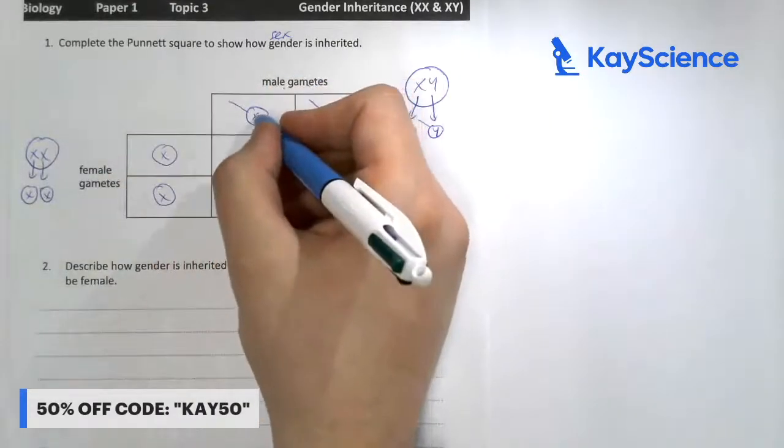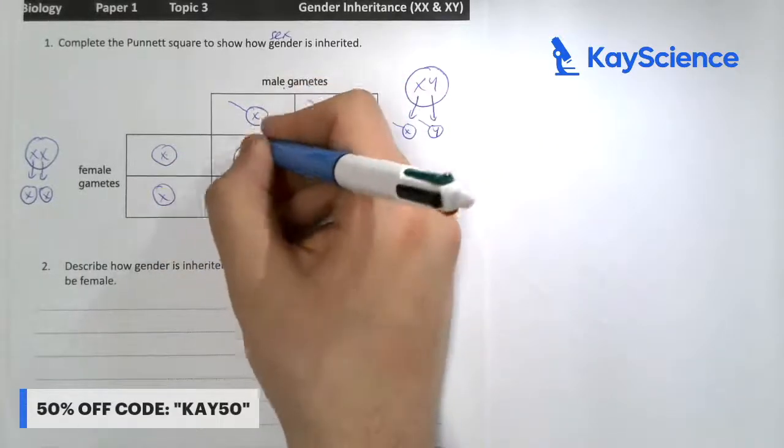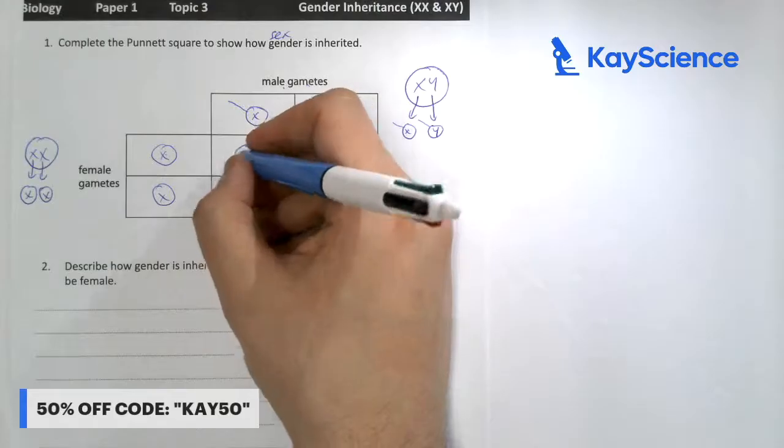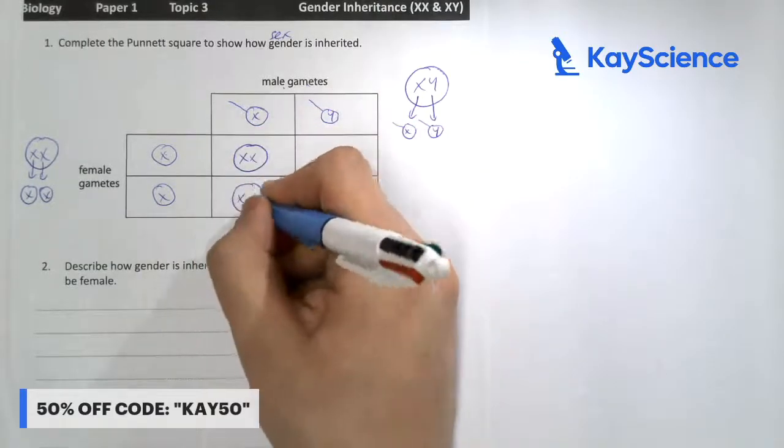So this X sperm fertilizes this X egg, we're going to have a zygote, which is a fertilized egg cell, which is XX. This one would also be XX.